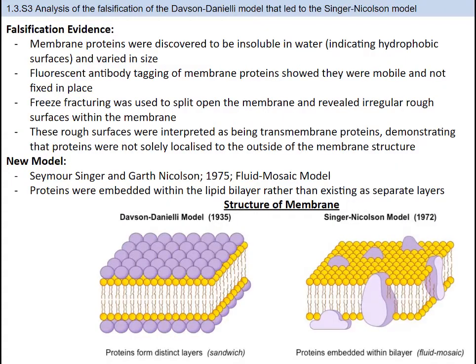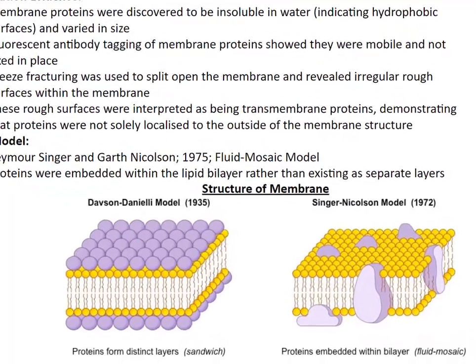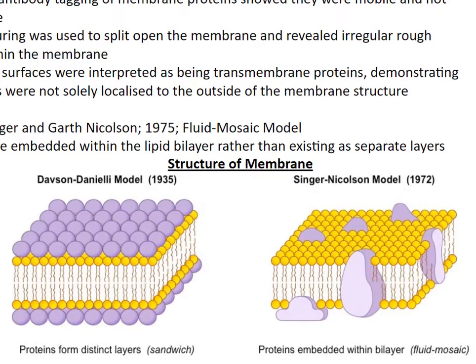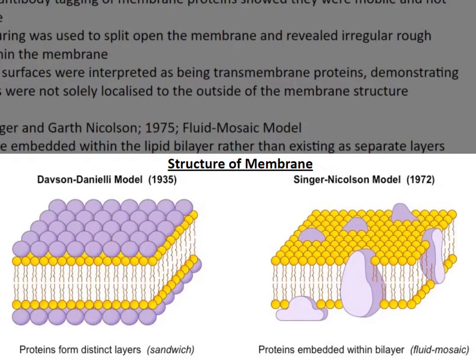In 1975, Seymour Singer and Garth Nicholson did some other experiments on the cell membrane. Singer and Nicholson used a technique called freeze fracturing to split open the cell membrane in half, and they revealed that some portions remained when they carefully peeled one half away — these were transmembrane proteins that do not split. Another piece of evidence were fluorescent tags placed on membrane proteins, which showed that proteins moved. They also found membrane proteins were insoluble in water, indicating hydrophobic surfaces. What they came up with is the fluid mosaic model we use today.